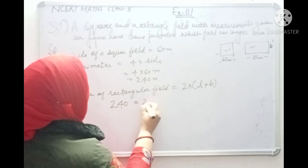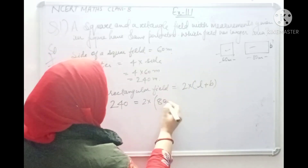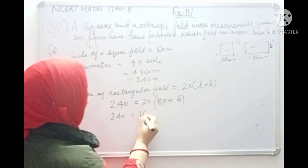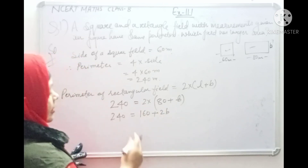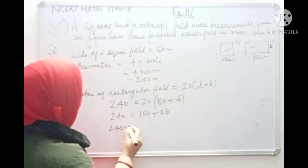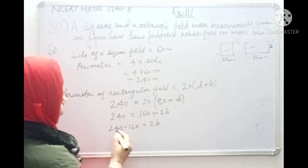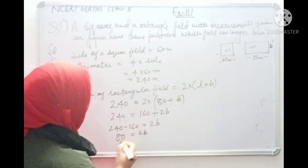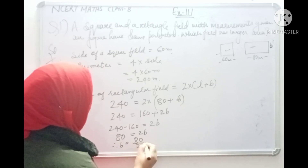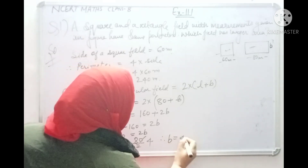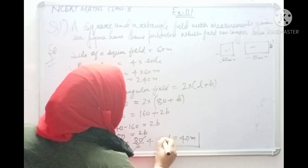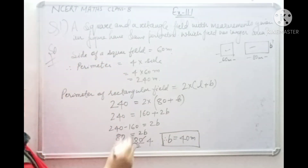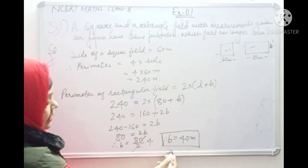So 2 into (l plus b) equals 240. Length l is 80 meters, but breadth b is unknown. So 2 into 80 gives 160, plus 2b equals 240. Moving 160 to the other side: 240 minus 160 equals 2b, giving us 80 equals 2b. Therefore, b equals 80 divided by 2, which is 40. Breadth of the rectangular field is 40 meters.